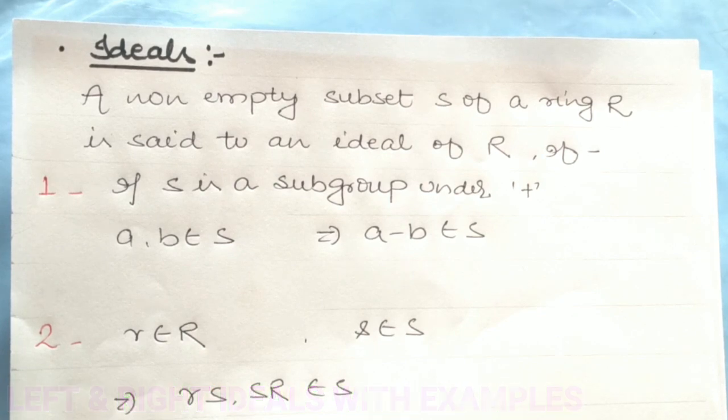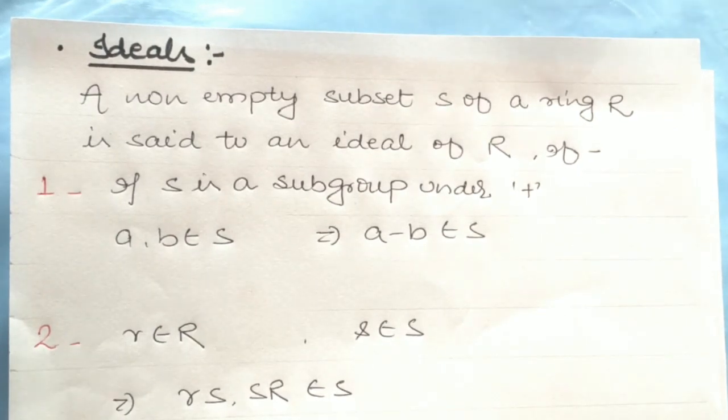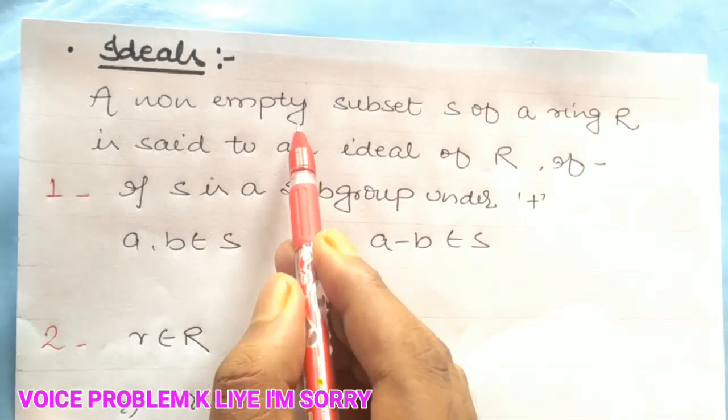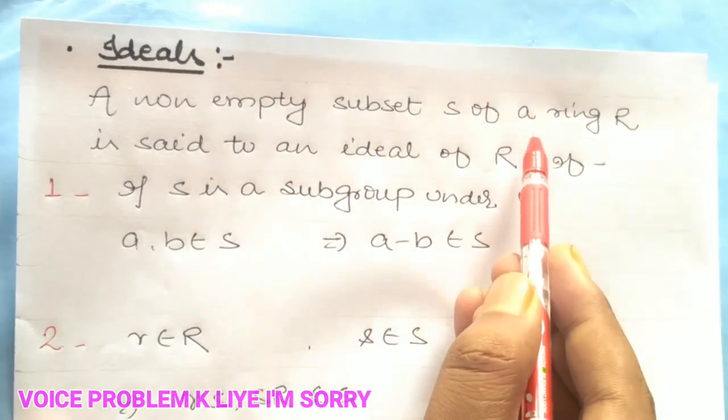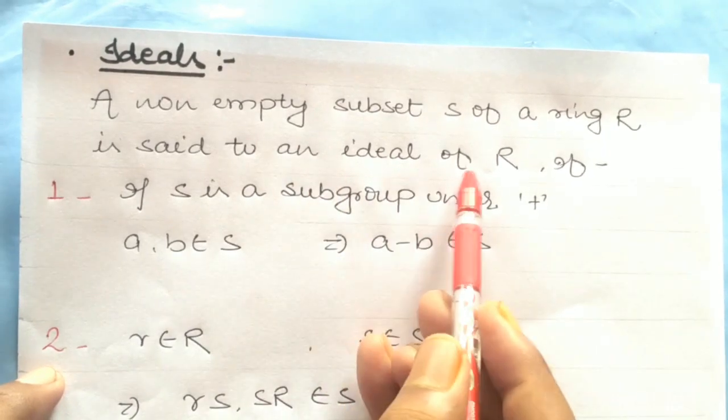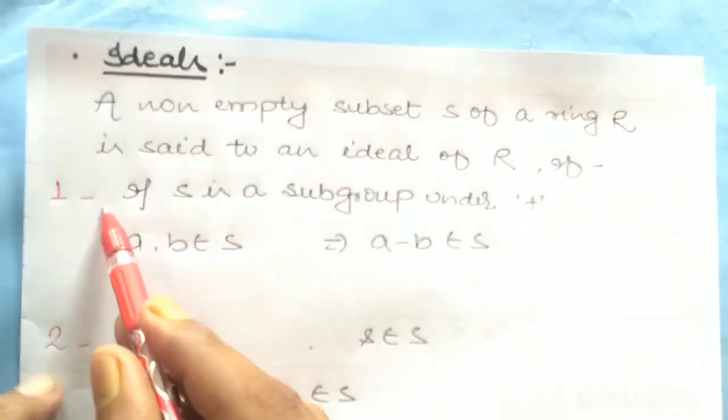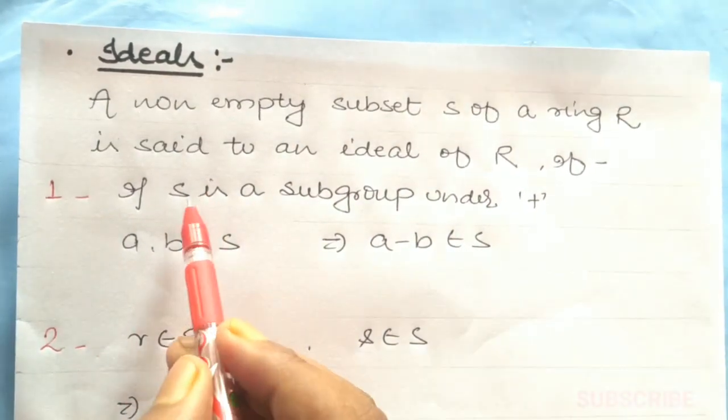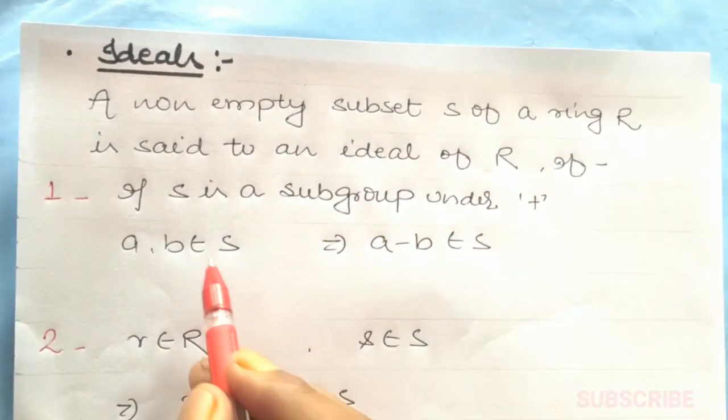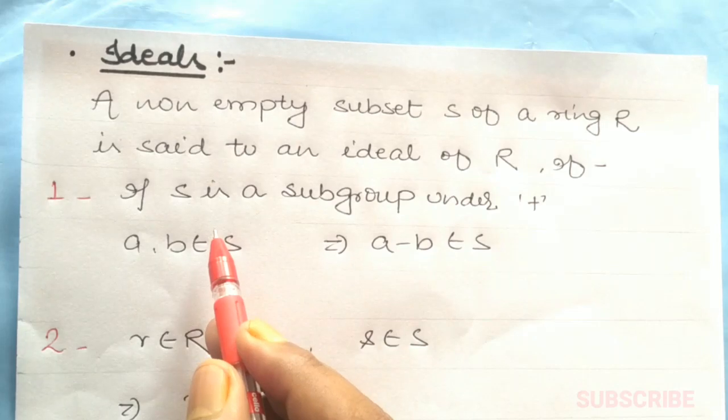If the video is good, please like at the end of the video. A non-empty subset S of a ring R is said to be an ideal of R if two properties are satisfied. What is the first property? S is a subgroup under addition.